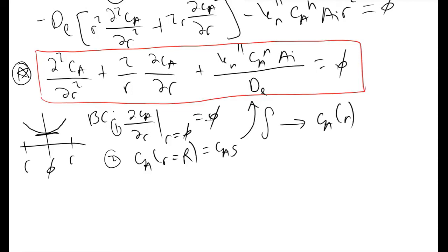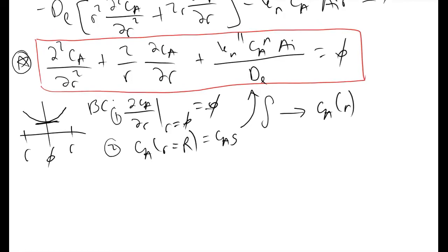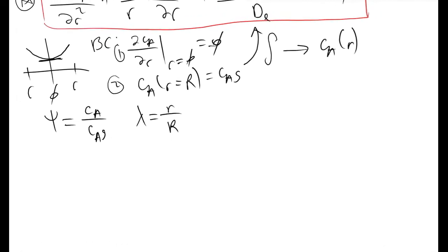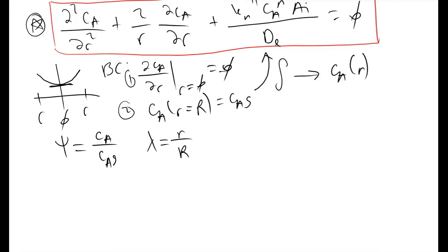In the Thiele modulus derivation, what we instead do with equation star is non-dimensionalize it. We let a dimensionless variable ψ equal C_A divided by C_AS (the surface concentration), and another dimensionless variable λ equal r divided by the total pellet radius R. These are dimensionless because they are molarity over molarity and length over length respectively. We then apply these substitutions to each term in equation star.